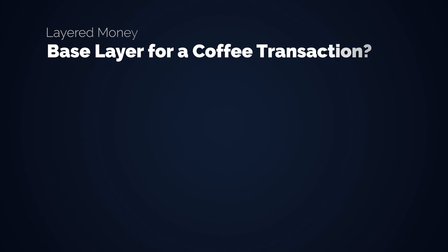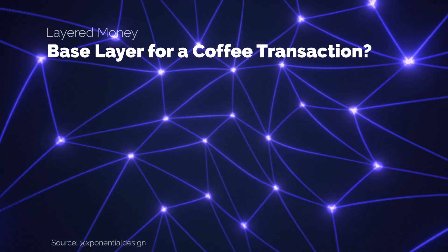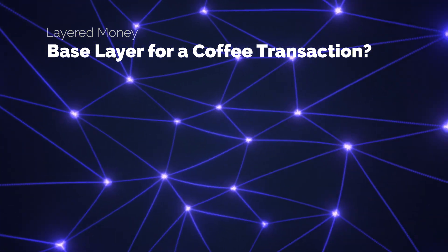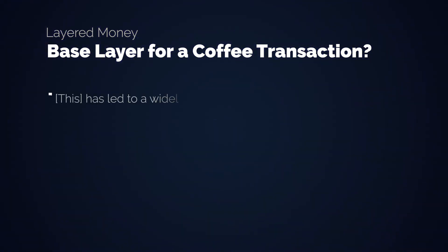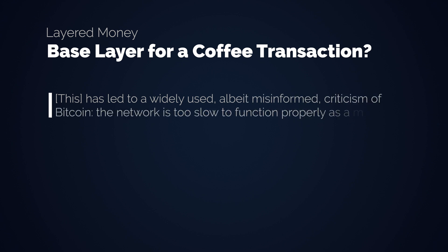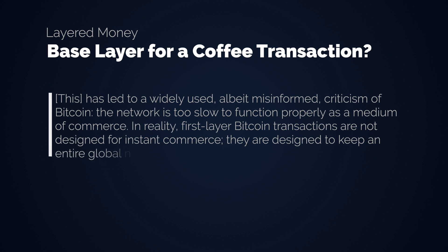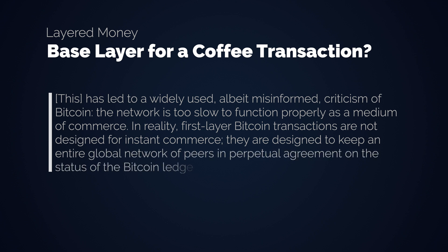Not being able to buy coffee with Bitcoin is something that critics usually like to state to prove that Bitcoin has no use case. And to be honest, recording a coffee transaction on tens of thousands of nodes around the world is not really the prime example for why a decentralized, censorship-resistant money makes sense. This has led to widely used, albeit misinformed, criticism of Bitcoin — that the network is too slow to function properly as a medium of commerce. In reality, first-layer Bitcoin transactions are not designed for instant commerce. They are designed to keep an entire global network of peers in perpetual agreement on the status of the Bitcoin ledger.